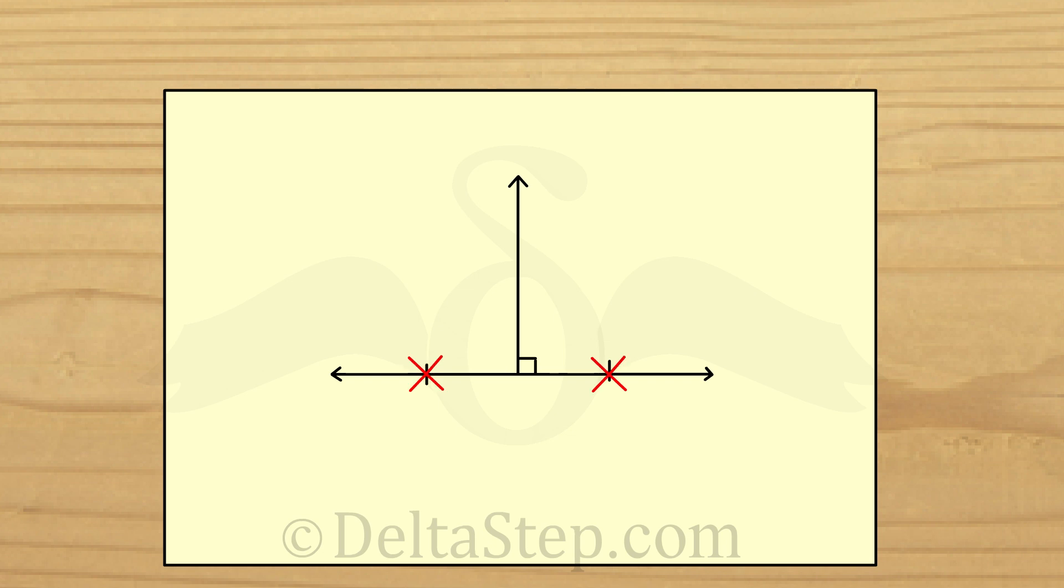Why? Because in order to bisect a line, you must know the measure of the line, so that you can divide it into two equal parts.